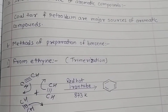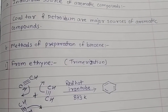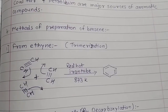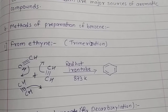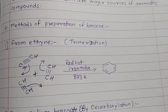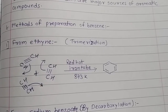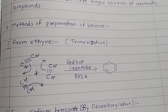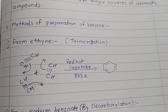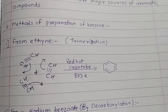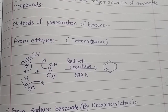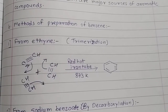Next, methods of preparation of benzene. The first method is from Ethine — Ethine is C₂H₂ (HC≡CH), also known as acetylene. Trimerization of Ethine takes place; cyclization occurs in the presence of a red hot iron tube at 873 Kelvin, and we get benzene as the product, which is the simplest aromatic compound known.